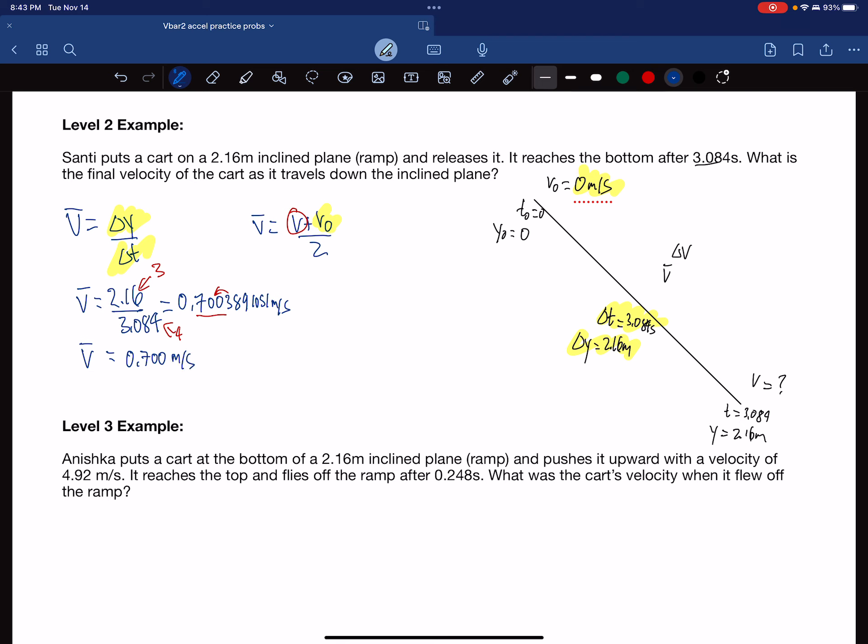Now, we're not looking for the average velocity. We're looking for the final velocity. Looking at our second equation now, we want to find the velocity. We know V0 is zero. So our equation becomes V bar equals V over 2. And therefore, V is twice the average velocity.